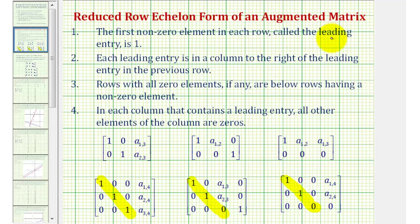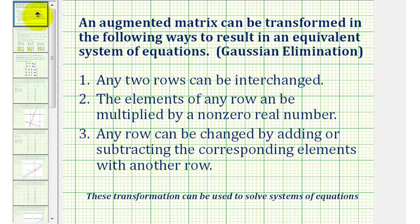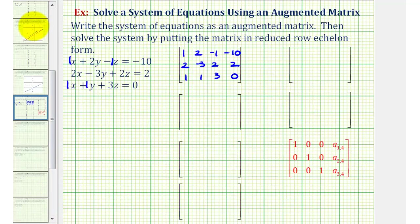Because we have a three by four augmented matrix, reduced row echelon form will fit one of these forms below. Notice if the main diagonal only contains ones, we have one solution. If the main diagonal contains a zero, we have either no solution or infinite solutions if we have a row of zeros. We'll transform the matrix into this form using Gaussian elimination, which allows any two rows to be interchanged, the elements of any row to be multiplied by a non-zero real number, and any row to be changed by adding or subtracting the corresponding elements with another row. Let's start by focusing on obtaining a zero in row two, column one, and row three, column one.